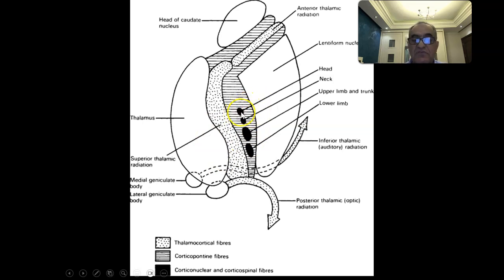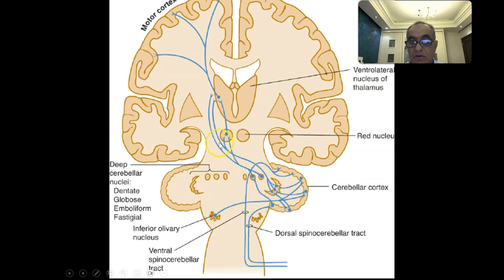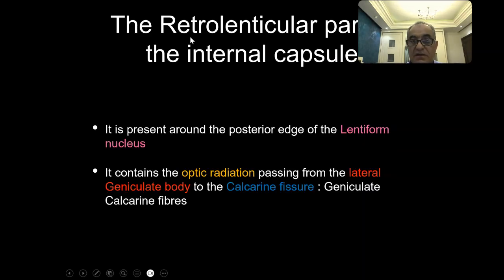The corticospinal fibers in the posterior limb can be further subdivided topographically into head, neck, trunk, and lower limb representations. The dentato-rubro pathway goes to the red nucleus, then through the internal capsule to reach the cerebral cortex as described.